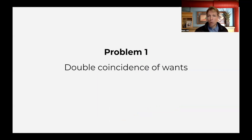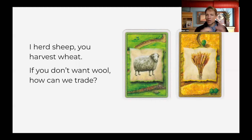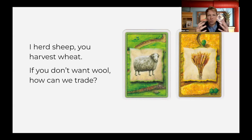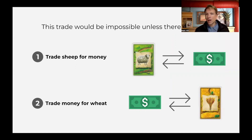The first problem is the double coincidence of wants — sometimes it's called the coincidence of wants, I think they're both correct. This is an issue where if you have two people coming together to trade but one person doesn't want what the other person has, an agreement really can't be made. If one person has sheep and one person has wheat, but the wheat person doesn't want the sheep, those two parties can't come to an agreement unless there is money. Then if you're the sheep herder, you can trade your sheep to somebody who wants them for money, take the money, give it to the wheat person, and you have your wheat even if they don't want sheep.